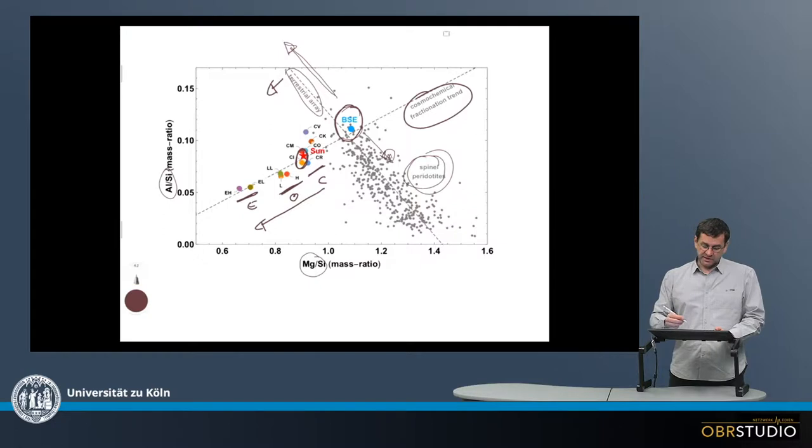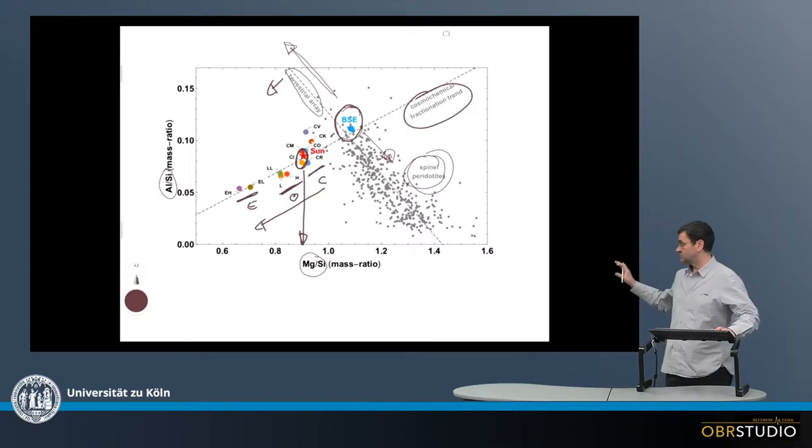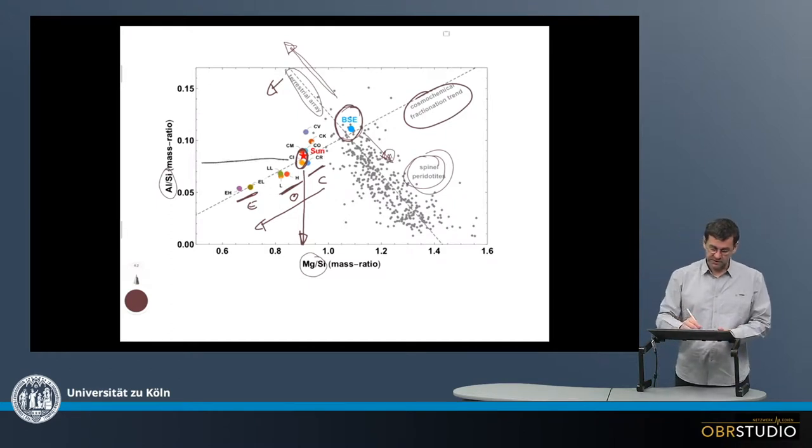Now, one other observation we make here is that the carbonaceous chondrites all have about the same magnesium-silicon mass ratio here. And this is quite a characteristic of the carbonaceous chondrites, that they all have the same magnesium-silicon ratio.